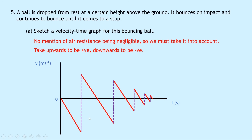The motion repeats and repeats until the ball eventually comes to a stop. The peaks of velocity are getting smaller and smaller because the ball loses energy due to friction and air resistance, so the height reached after each bounce is not as high — just as you would expect when you drop a bouncing ball in real life.